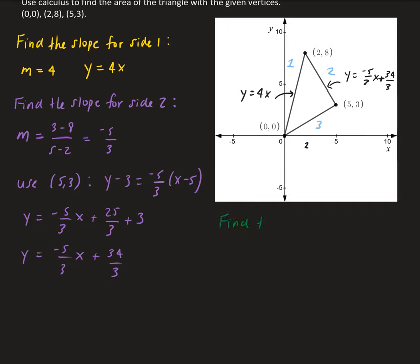Now we find the slope for side 3. That side goes through the origin and (5,3), so the slope is simply 3 fifths. Since it passes through the origin, the equation is y = 3/5·x.